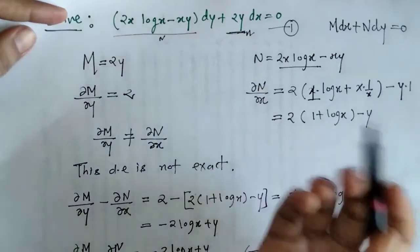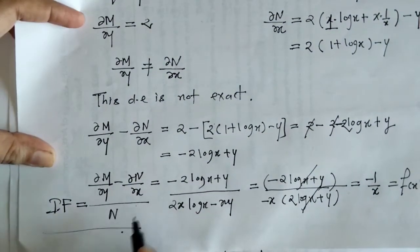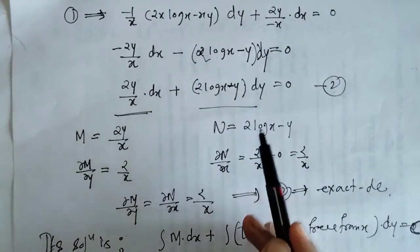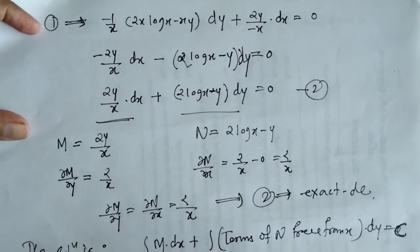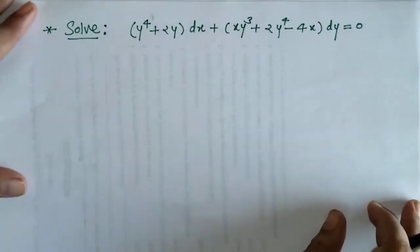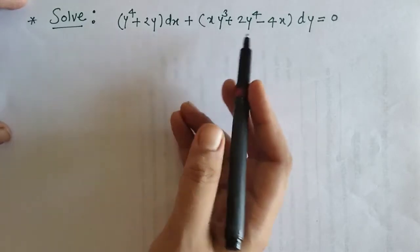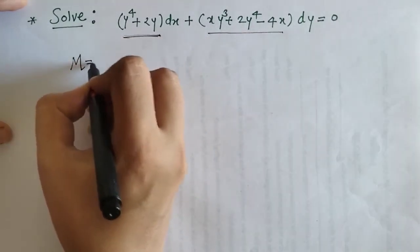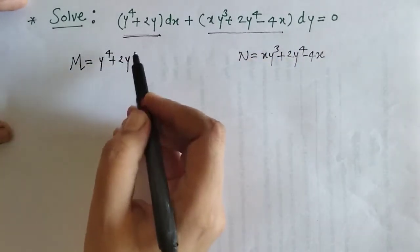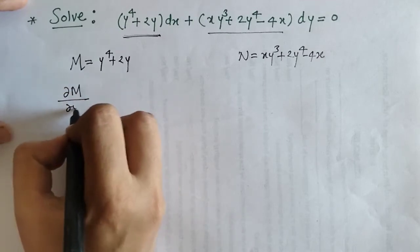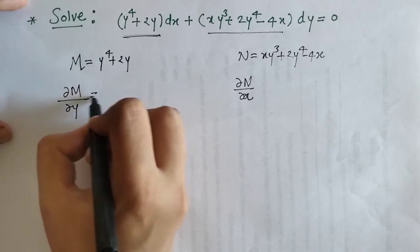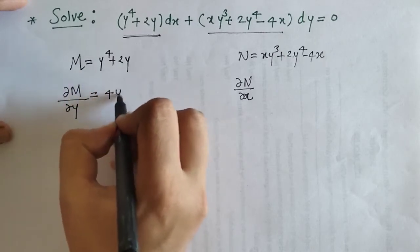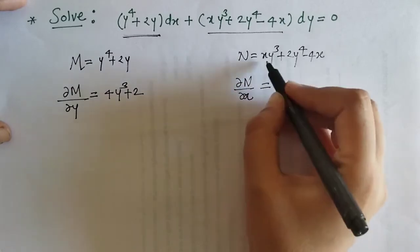In this way we have found the solution of this differential equation. We reduced this non-exact differential equation to an exact one by finding the integrating factor. By multiplying the given differential equation by the integrating factor, we got an exact differential equation and found its solution. Now we have one more example. We have to solve this differential equation.